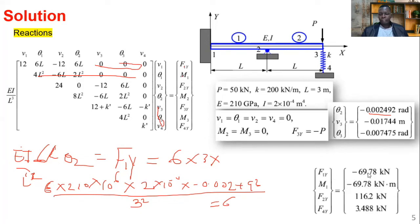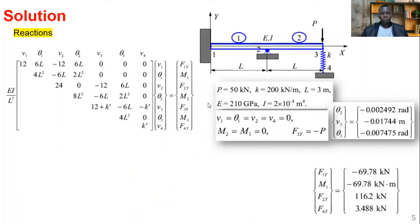Similarly, for M1 use the second row of the global equation to get the moment reaction. Working through the arithmetic gives F1 approximately 69.78 and M1. That covers all the quantities being tested in this example. Let me know in the comments if there is anywhere you felt stuck.